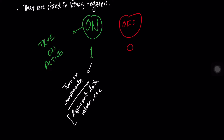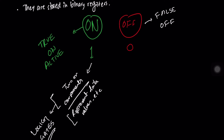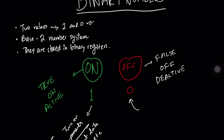Basically, 'on' values are true values — values the computer is able to read and understand. This 'on' value may turn on components inside the computer or represent data values. The 'off' value is represented by a zero. This is the basic understanding of how the computer works with binary. Now let's understand what a base-two number system is.